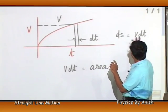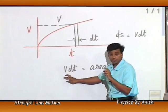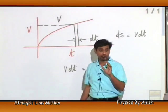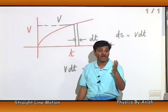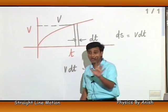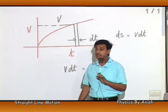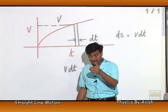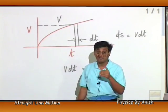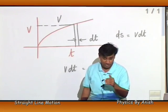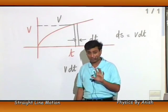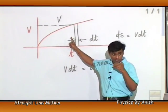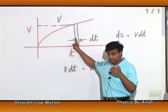The area of this strip is giving you displacement. If we take the whole area, then total area gives total displacement. Dividing by time gives average velocity. Note: velocity is always positive; negative is not applicable here.